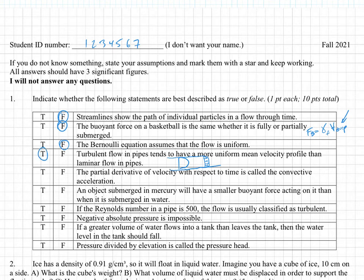The partial derivative of velocity with respect to time is called the convective — no, this is called the local acceleration. So we could have fixed that by calling it the local. That's just a vocabulary word really.